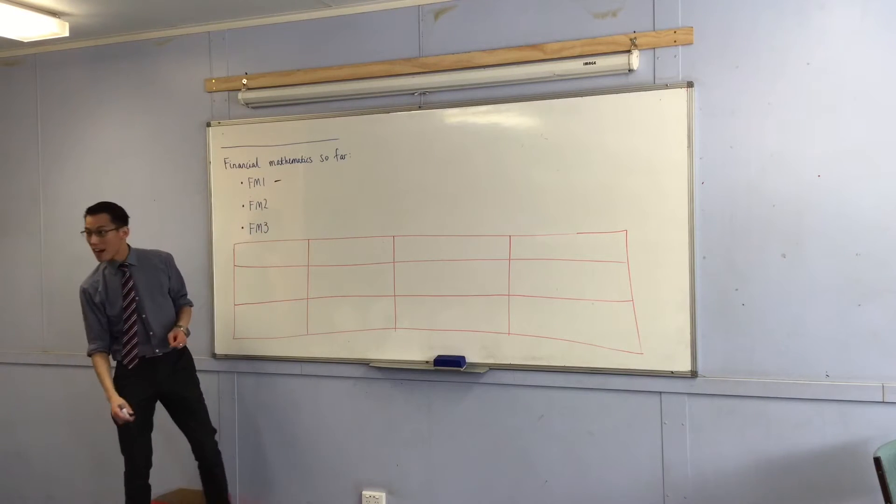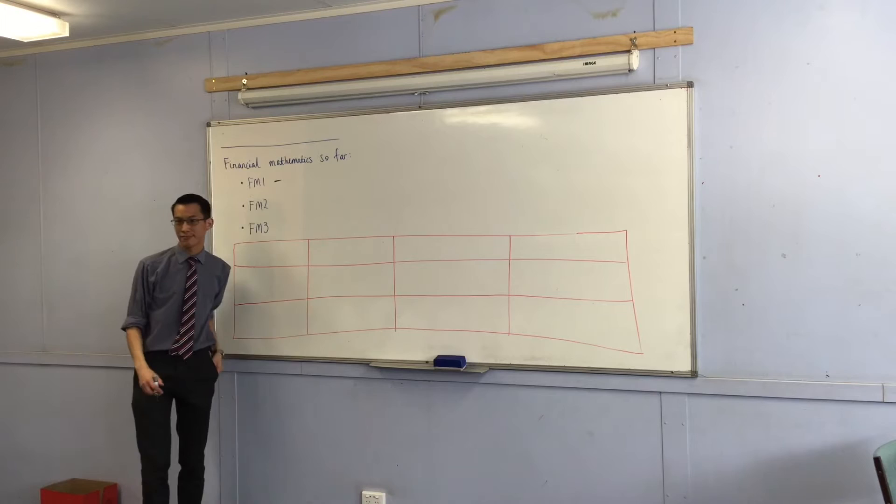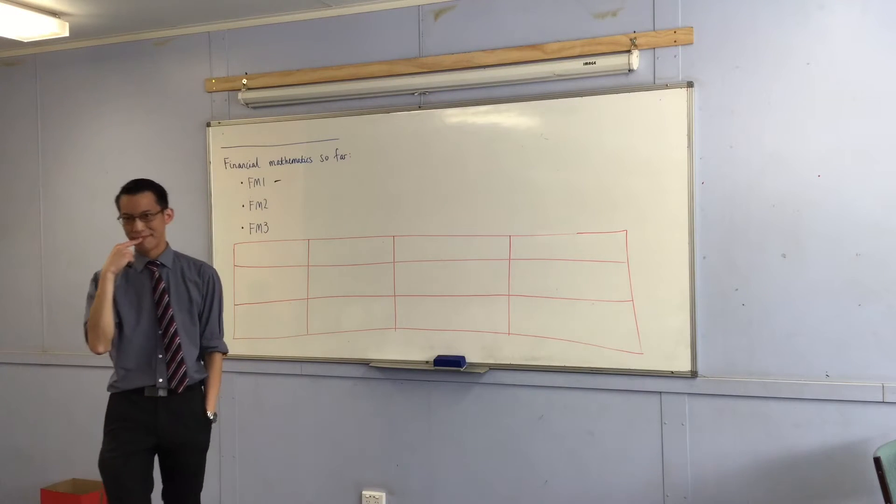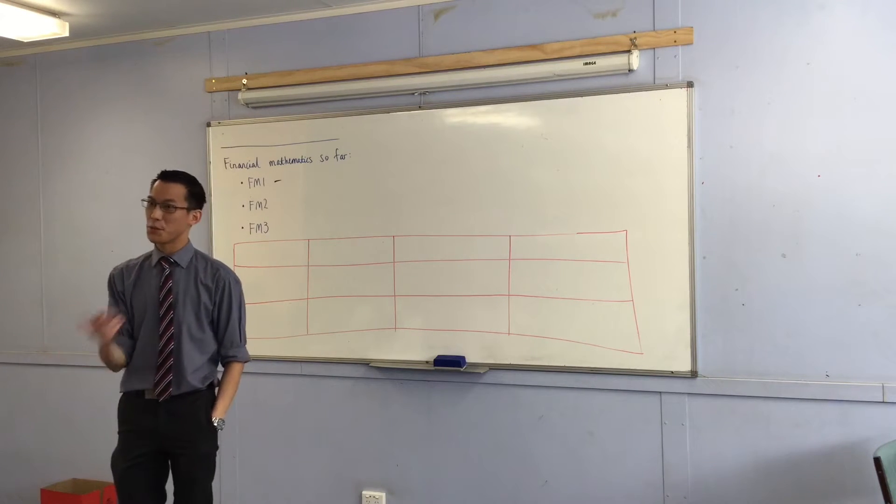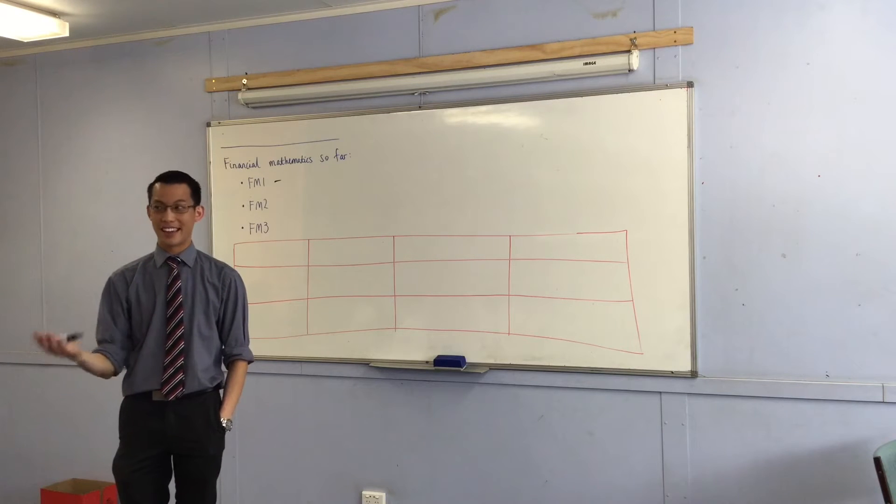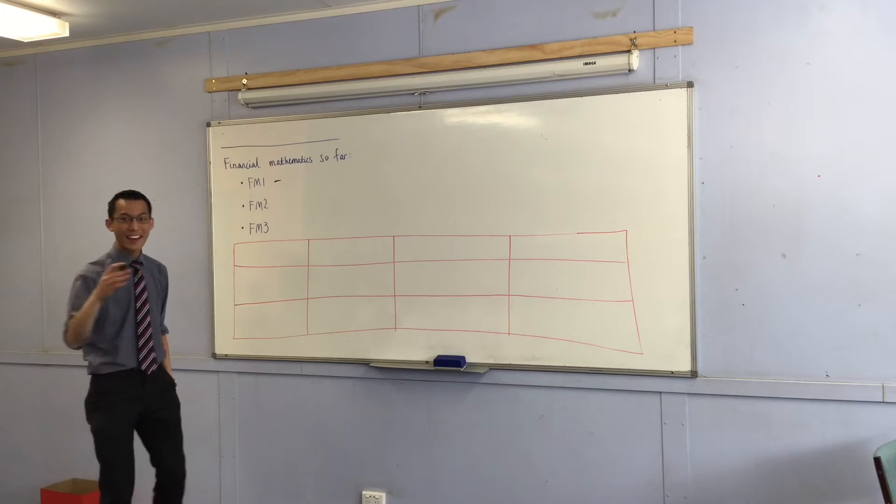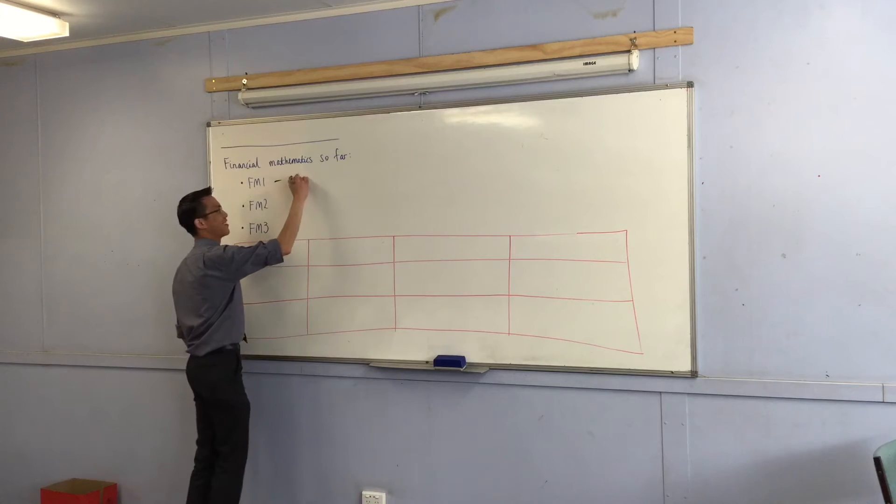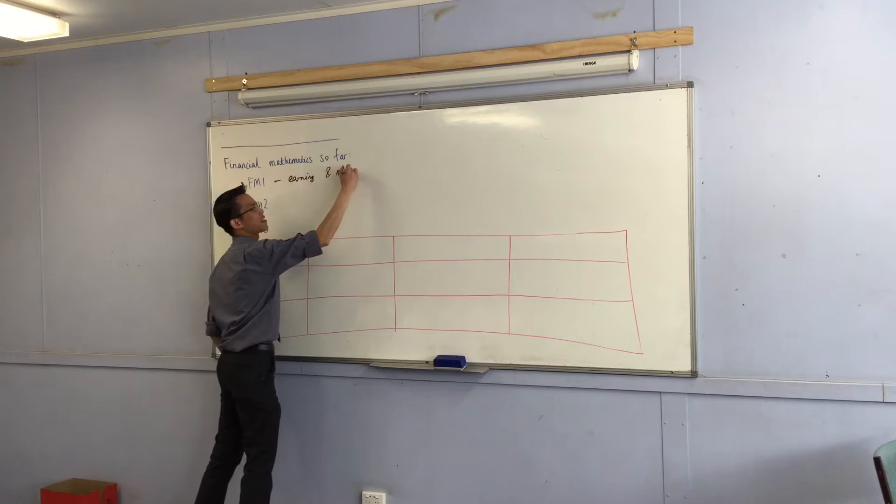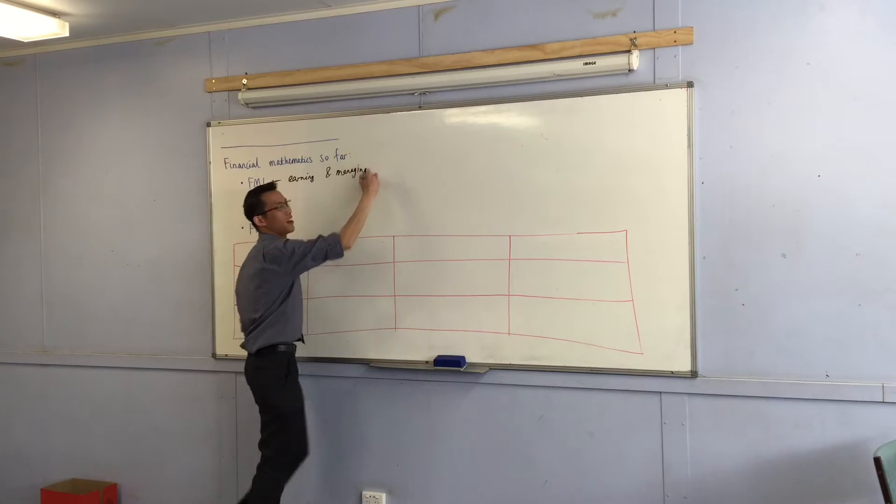FM1 right at the start of this year. The very first thing you got to do if you want to talk about money is you need to get the money. We call that earning and once you've got it you want to be able to write a quick budget on it. Earning and managing is where we began.